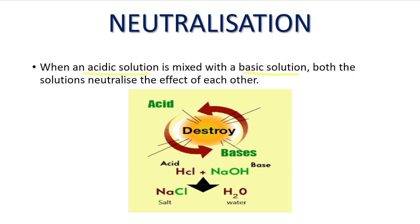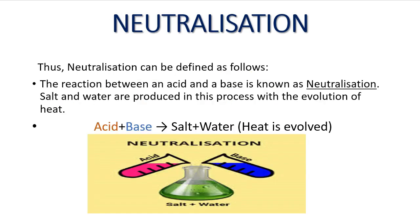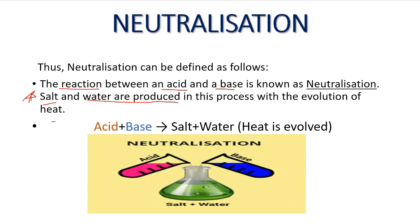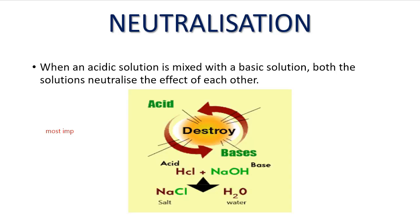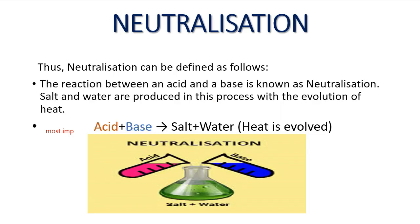The answer is the neutralization process. In neutralization, when an acidic solution is mixed with a basic solution, both solutions neutralize the effect of each other. A classic example: HCl plus NaOH — HCl is the acid and NaOH is the base. When we add hydrochloric acid and sodium hydroxide, the products are NaCl (sodium chloride, which is salt) plus water (H2O). Neutralization is defined as the reaction between an acid and a base. Salt and water are produced in this process with the evolution of heat. The key equation is: acid plus base gives salt and water.